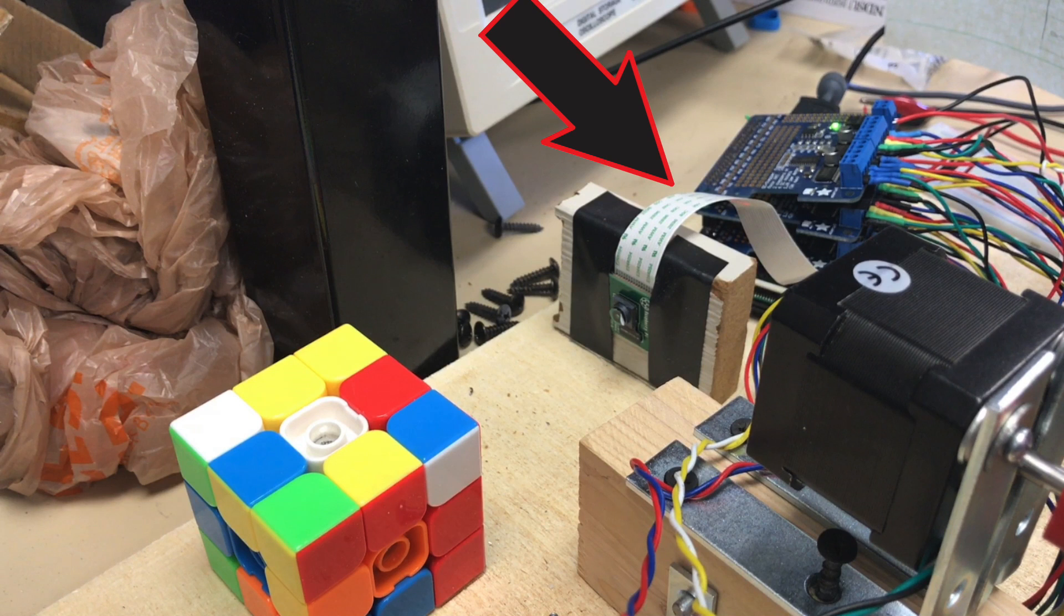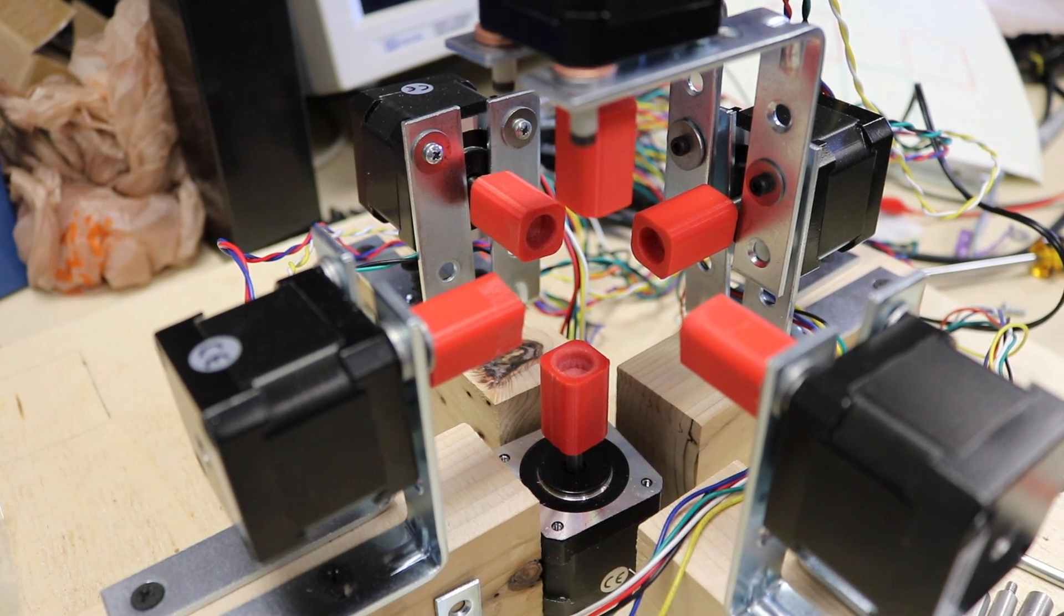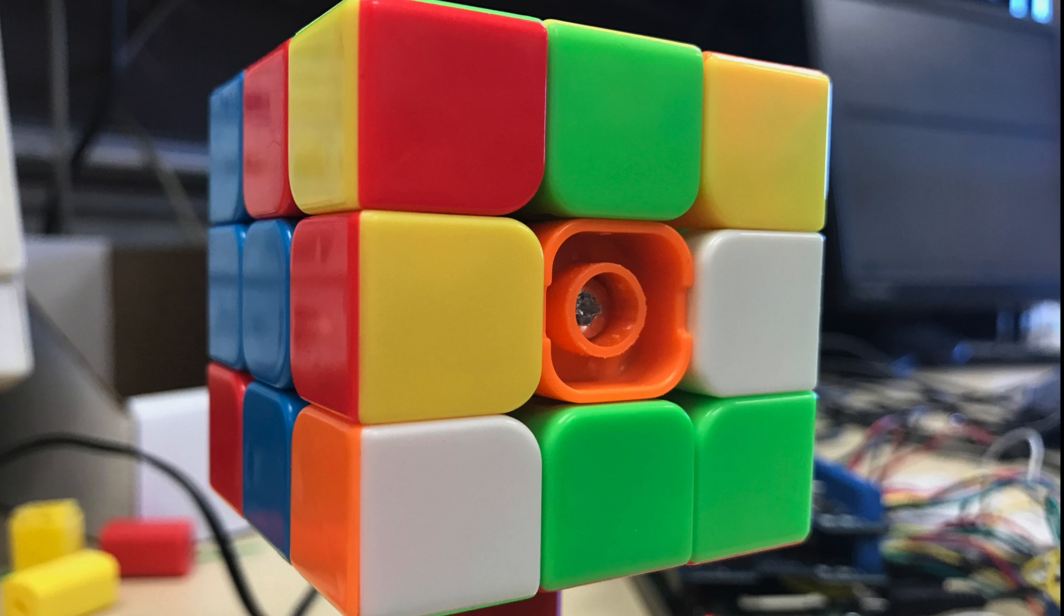For our project, we used the Raspberry Pi, stepper motors and controllers, a camera, and a custom-built enclosure with 3D printed parts. The Rubik's Cube we chose was a professional speed cube for easier turning and removable center sections.